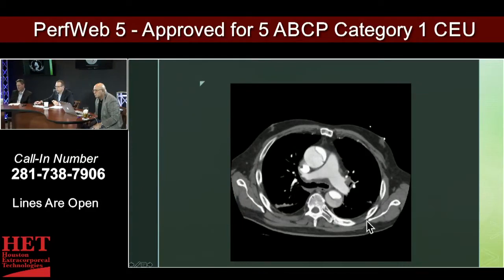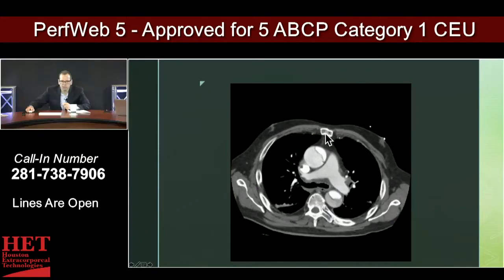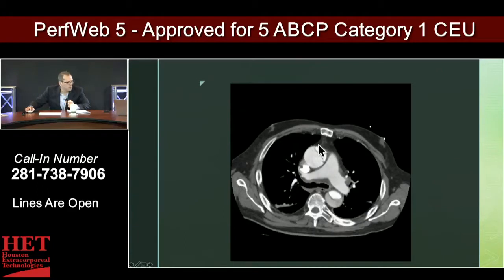This is going to be the scapula — outside the chest cavity. Anteriorly you have the pectoralis here and breast tissue. This is going to be the sternum. Directly beneath the sternum we have the anterior mediastinum. So if you have a patient with a mediastinal mass, this is where you're going to see it — a thymoma, a thyroid malignancy, a teratoma, or even a lot of lymphomas will show up in this area as well.